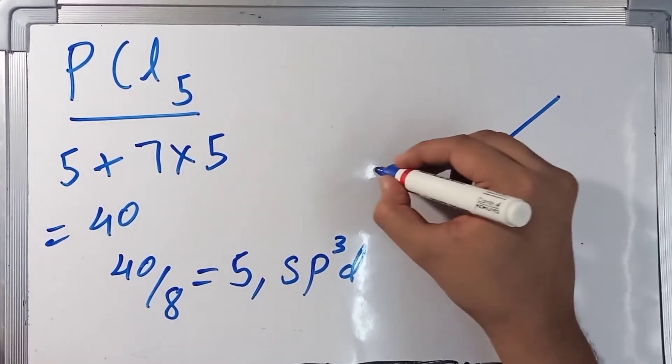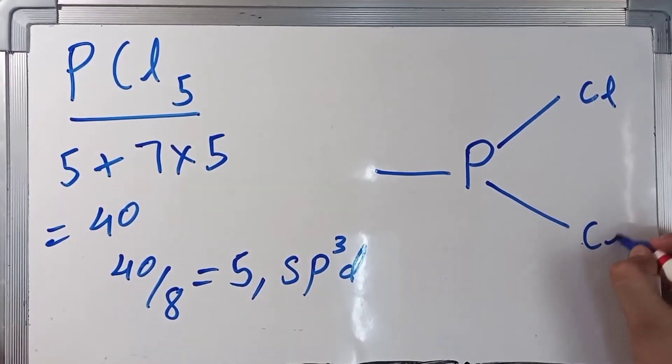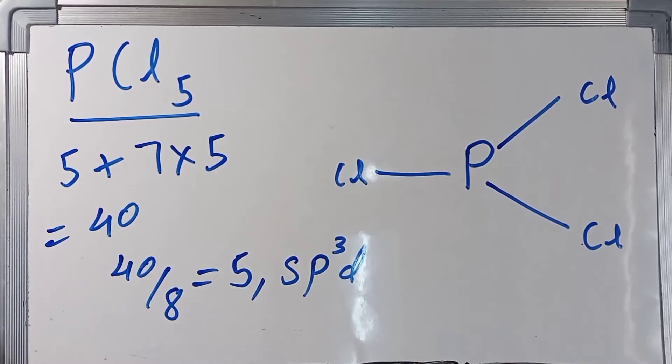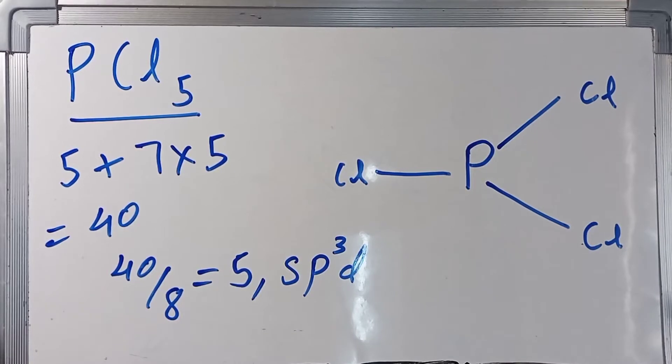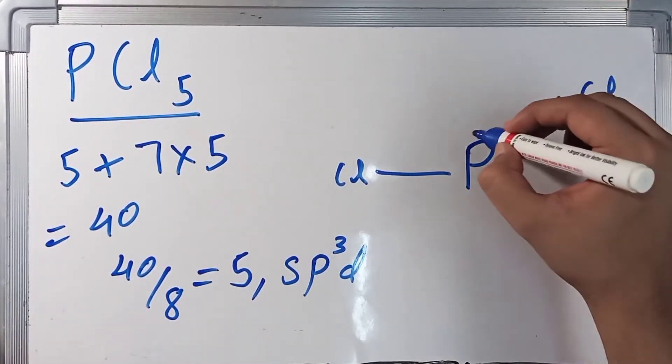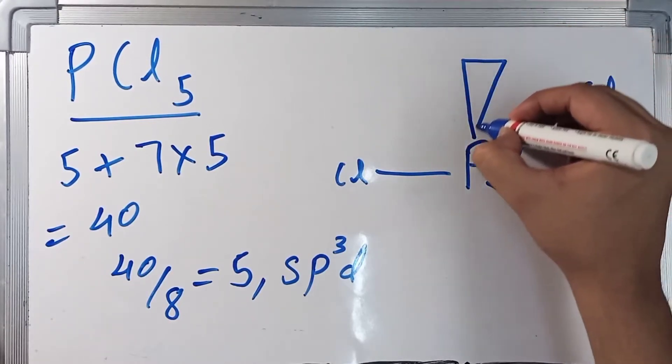The triangle has Cl, Cl, Cl, and Cl. We are talking about trigonal bipyramidal. One Cl will be above this plane.